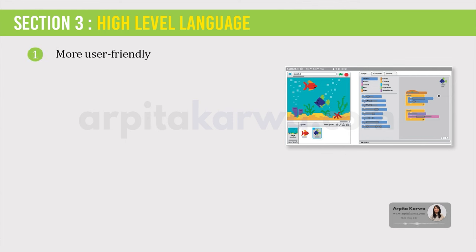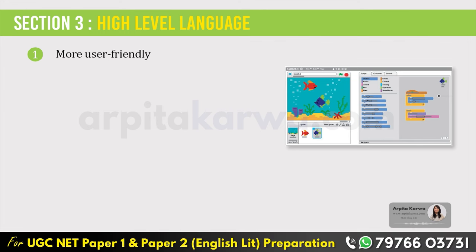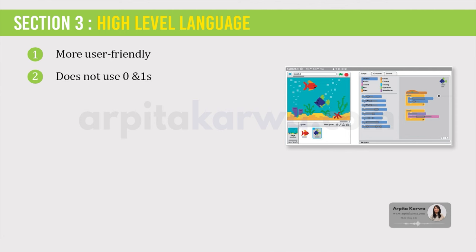Friends, high level language is a more user friendly language. It is a programming language that uses English and mathematical symbols like plus, minus, percentage and many others in its instructions. When using the term programming languages, most people are actually referring to high level languages. High level languages are the language most often used by programmers to write programs. They do not use zeros and ones. High level languages use many more English commands and are significantly more readable than assembly or machine language. High level languages make them much easier for the programmer to read, write and debug.